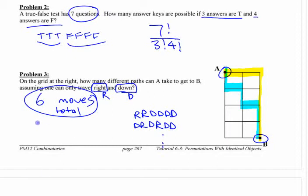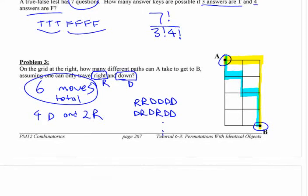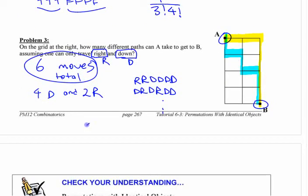Basically, you have six moves and there are four rights. No, there's two rights. There's four downs and two to the right. So you could do this by saying six factorial over four factorial, two factorial.